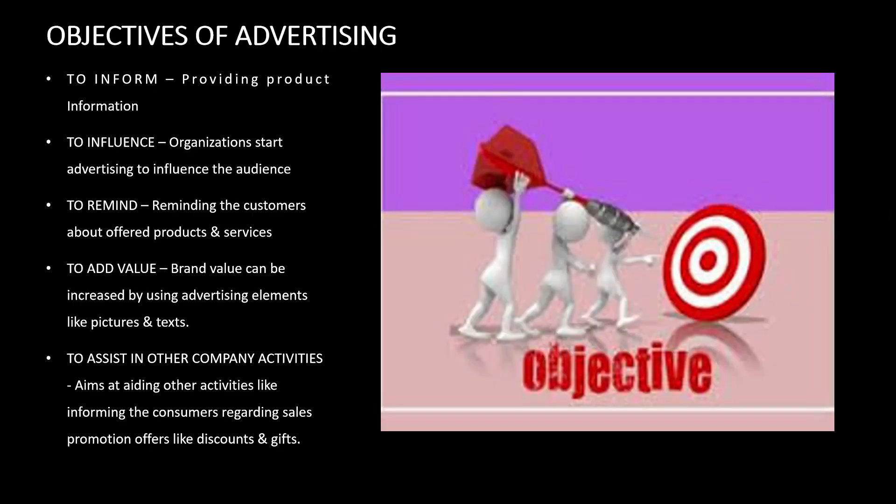Next, objectives of advertising. The first objective is to inform — that is, providing product information. Providing product information is the key purpose of advertising. The advertising strategically focuses on drawing the attention of potential customers through utilizing effective verbal and communication techniques that become highly appealing. The second objective is to influence.